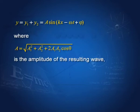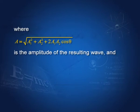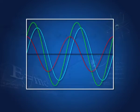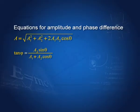If there is no phase difference, then A equals A₁ plus A₂. If the phase difference is π, then cos θ is minus one and A is simply A₁ minus A₂. And tan φ, the new phase, is A₂ sin θ divided by (A₁ + A₂ cos θ). φ is the phase difference between the first wave and the resulting wave. The resulting wave is still a sine wave. If the frequencies of two interfering waves are not equal, the resulting wave would not be a sine wave — frequencies must be equal. Amplitudes and phases may differ, but frequencies have to be equal.